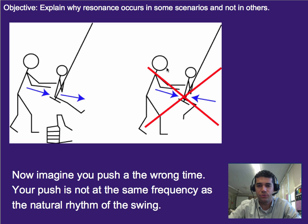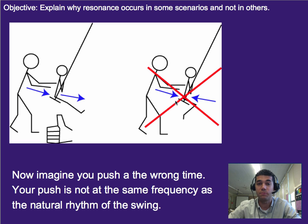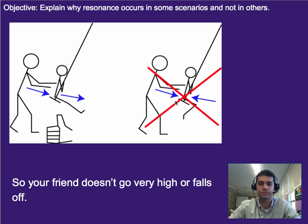Now imagine you do this and it's not timed right. Then what happens — like in this scenario where you're pushing at the wrong time — you basically are slowing the person down, or if it's really bad, you may even push them off. This is because your pushes aren't timed with the natural frequency of the swing, and so it's a more destructive interference example. Your friend doesn't get to go very high, or they basically just fall off.